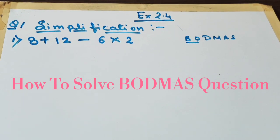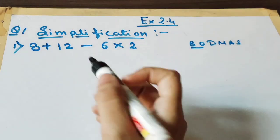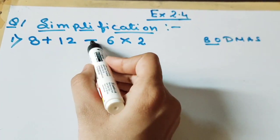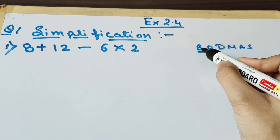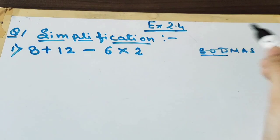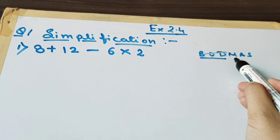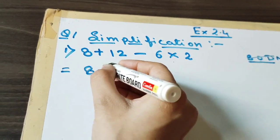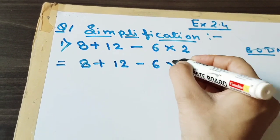Now we will be doing question simplification. First we will see the numbers and the signs — there is plus, minus, and multiply. That means there is no division sign, no bracket, no 'of'. Since there is no division, that step is not required. We need multiplication. So first we will note down the question as it is: 8 plus 12 minus 6 multiply by 2.